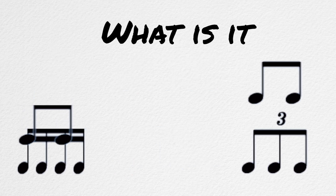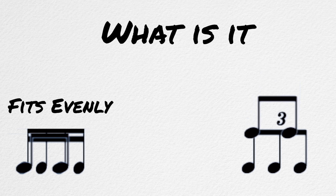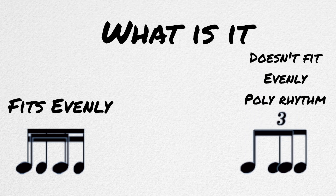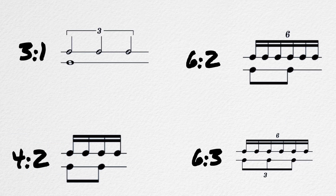But what is a polyrhythm exactly? A polyrhythm is two or more rhythms that are played at the same time that do not evenly fit into one another. The only common divisor that they have is one. These are polyrhythms because they cannot divide evenly into each other, and these are not polyrhythms because they do divide into each other evenly.